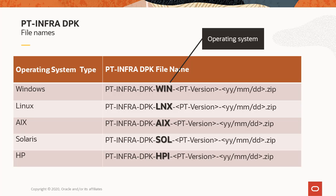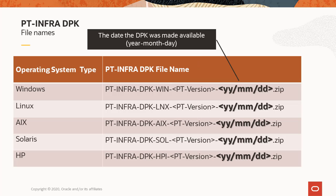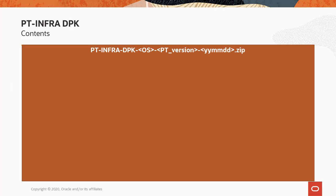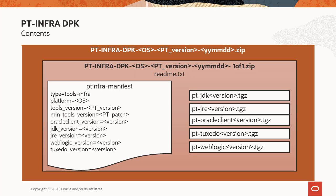The file names for the PT-Infra-DPK include an abbreviation for the operating system type, the PeopleTools release such as 858, and the date it was made available in the format year, month, day. The DPK on MOS is double-zipped. After unzipping the first one, you get a second zip file and a README text file. The embedded zip file includes the archives for the software components and the manifest file which includes the software versions.